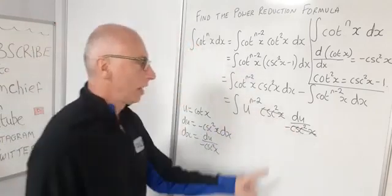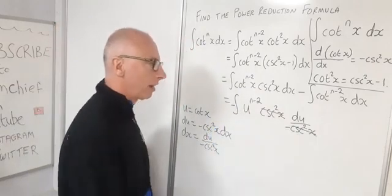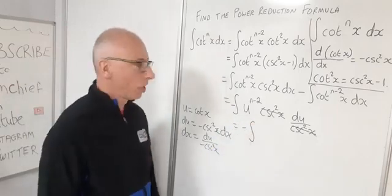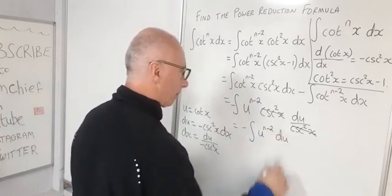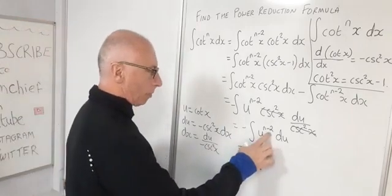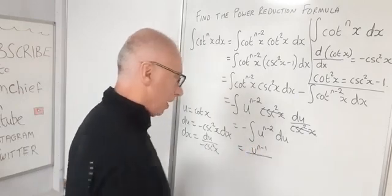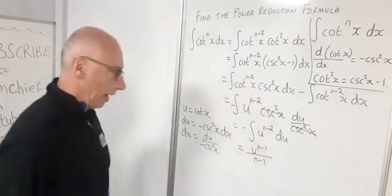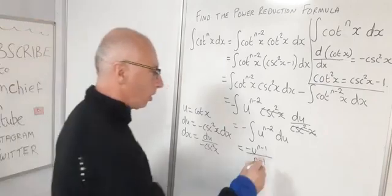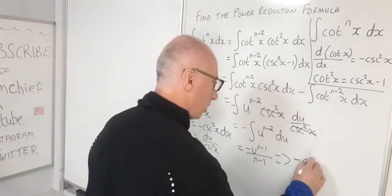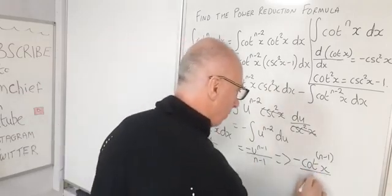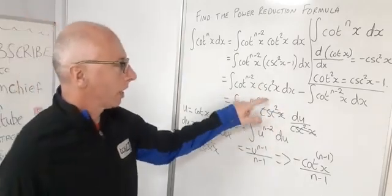The cosecant squared terms cancel, and we bring the minus sign out front. So the first integral becomes the negative of the integral of u to the n minus 2 du. Applying the power rule, we raise the power by 1 to get u to the n minus 1, then divide by the new power n minus 1, keeping the minus sign. Back-substituting u equals cotangent of x gives us negative cotangent of x to the n minus 1 divided by n minus 1.